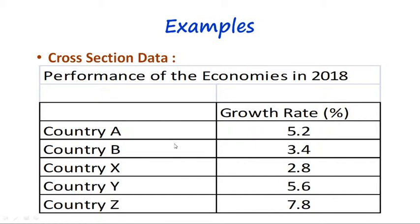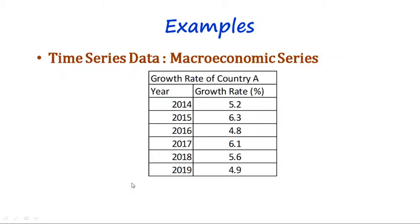As an example of cross-section data, this table shows the growth rates of different countries at a single point of time, showing the performance of economies in 2018. Since there is no time dimension — just a single point of time — and there are different sections, this is a cross-section data.